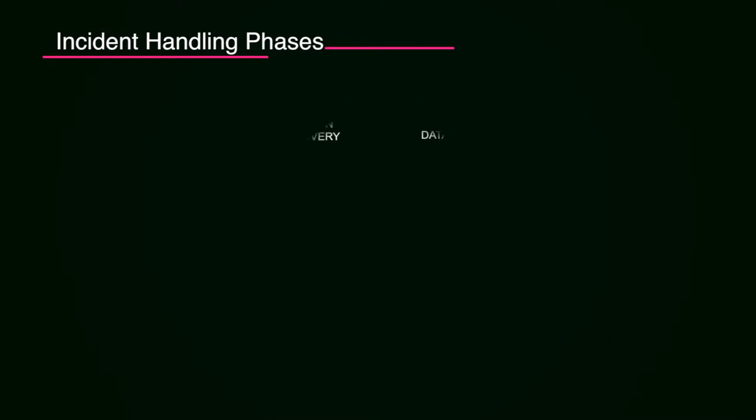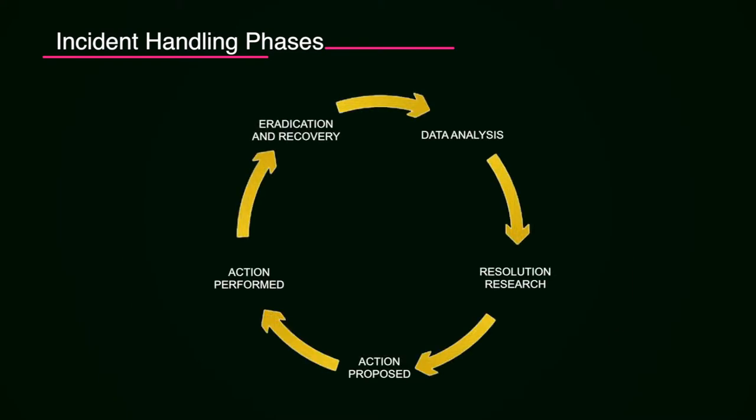The incident handling life cycle is crucial for CSIRT operations. The incident handling phases include data analysis, resolution, research, proposed action, action performed, eradication, and recovery. Data analysis and investigation of the incident is followed by resolution — how it can be resolved — then the proposed action, action to be performed, and eradication and recovery from the incident.